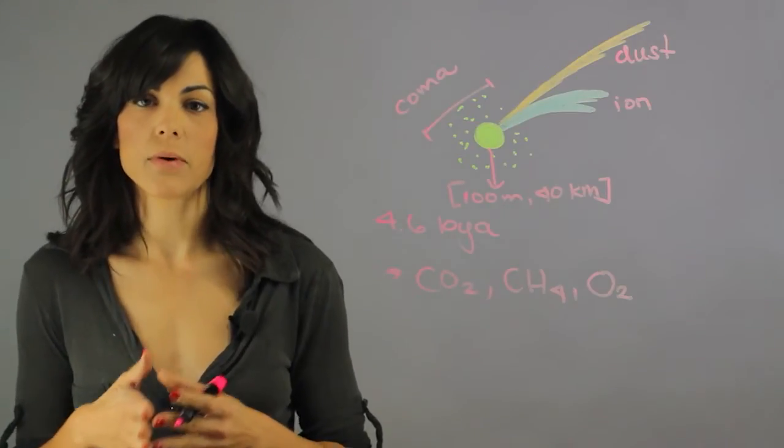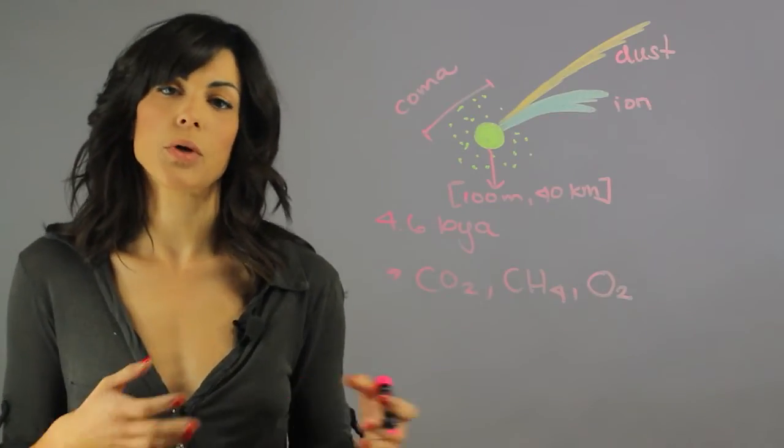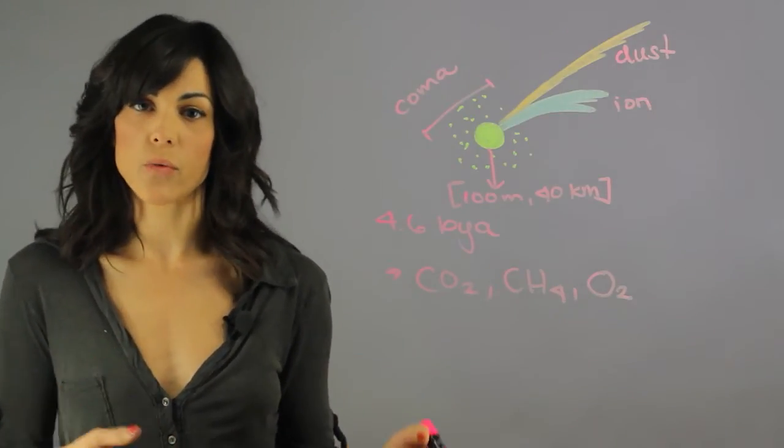Comets actually have stable orbits around the sun, and their orbits can range from a short period, which is less than 200 years, to a long period, which is over 200 years.